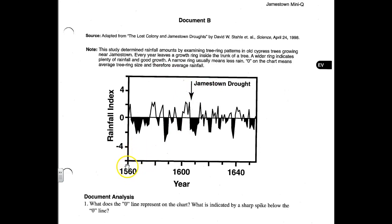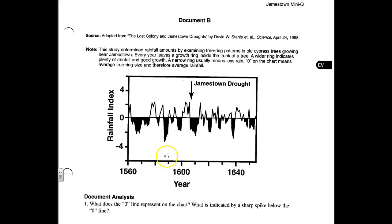The chart goes from 1560 up to about 1660, and the rainfall index is on the left-hand side. If you were at zero in any year, that would indicate average rainfall. It's up to you to determine what rainfall amounts above zero and below zero mean. The number on the left indicates the amount of rain above or below normal.